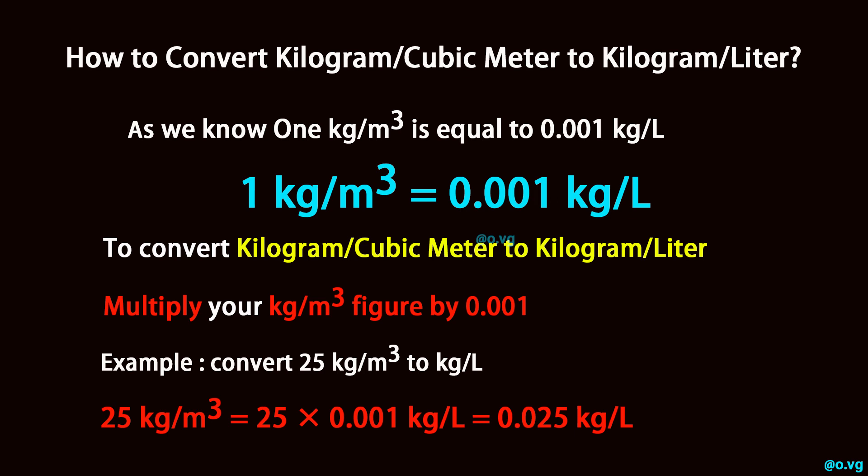To convert kilogram per cubic meter to kilogram per liter, multiply your kilogram per cubic meter figure by 0.001.